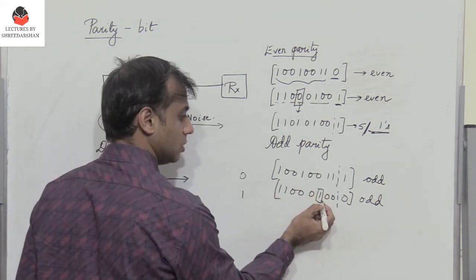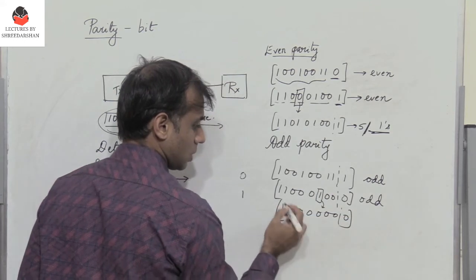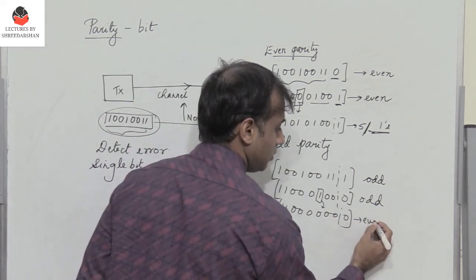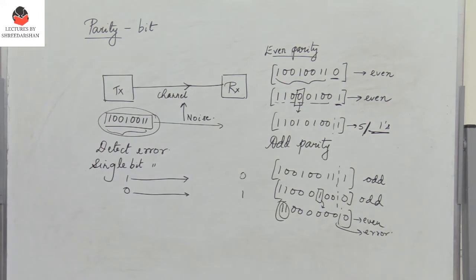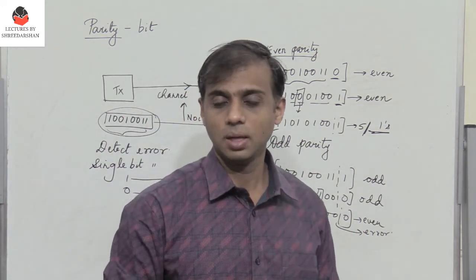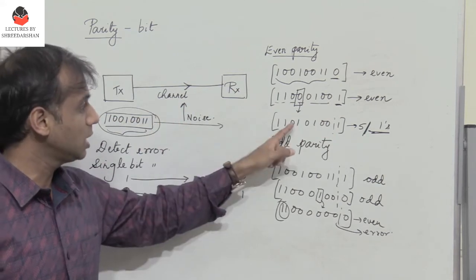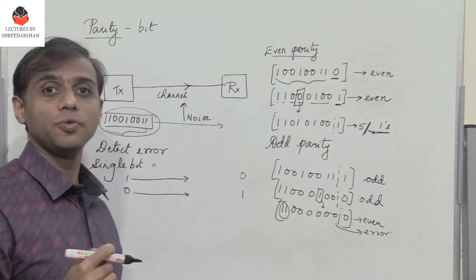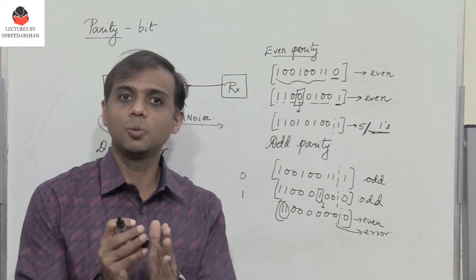Assume one bit is in error and a 1 changes to 0, giving 11000000. At the receiving end, we count the 1s and find an even number — two 1s — which means the data is in error and the correct data must be retransmitted. A parity bit can only detect single bit errors; we can know that the data is in error, but we cannot identify which bit is in error or correct it.